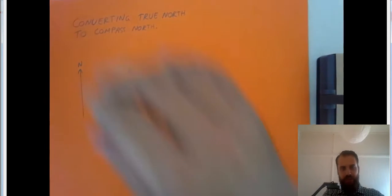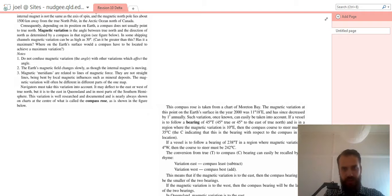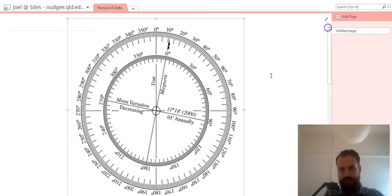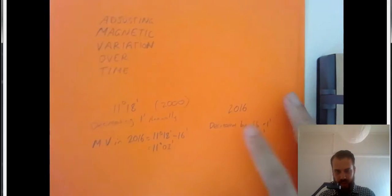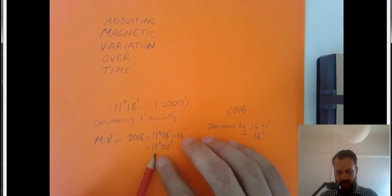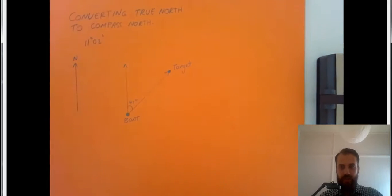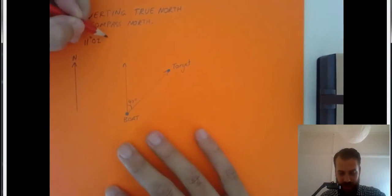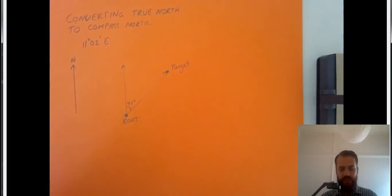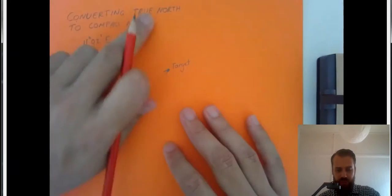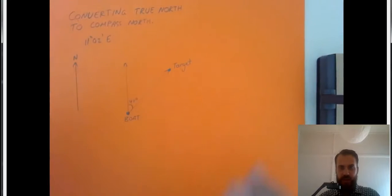From our last video, you guys will remember that we calculated, using that compass rose, we calculated the magnetic variation to be 11 degrees and 2 minutes. It was a magnetic variation of 11 degrees 2 minutes east. So if we're converting from True North to Compass North, there's a really easy rule of thumb that we use here.